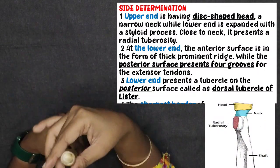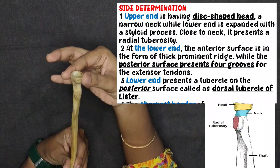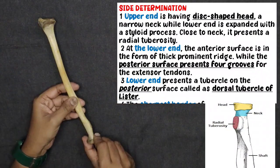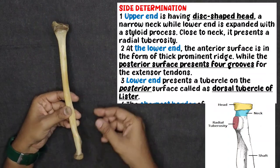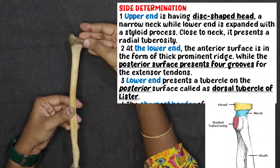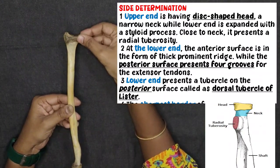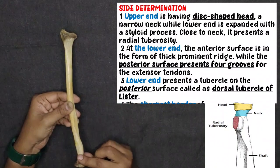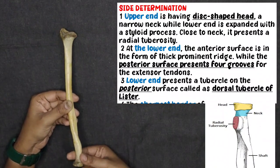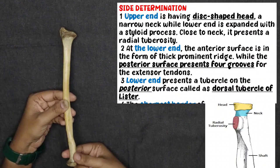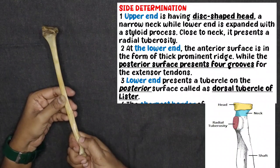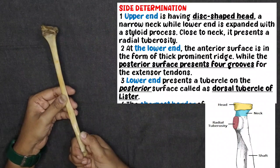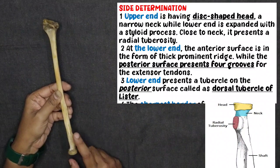For side determination: the upper end is rounded and disc-shaped, while the lower end is broad. The upper end is narrow, and the upper end has the radial tuberosity, which is a rough area.